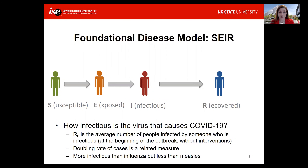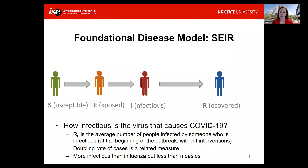Before going deeper, I want to talk about another definition useful when hearing about COVID-19 as well as influenza or other viruses — how a virus is measured in terms of its infectivity. The most important measure is called R0, or the reproductive rate. It's an imperfect measure, but it's generally defined as the average number of people infected by someone during their infectious period at the beginning of an outbreak, without interventions in place. As interventions are put in place, the effective R0 can change over time, as can community immunity. The doubling rate of cases is directly related to R0.